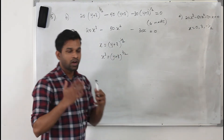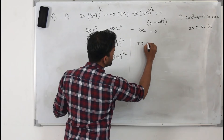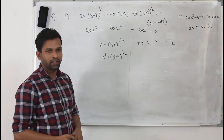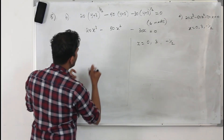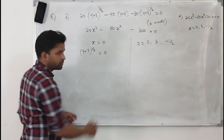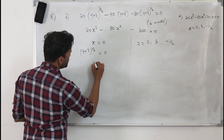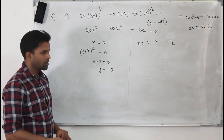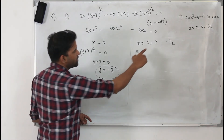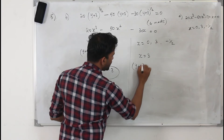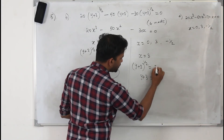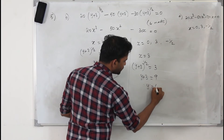We have already solved that equation and got three solutions. We are going to use those: x equals 0, x equals 3, and x equals minus one half, and substitute x back as (y plus 3) to the power of one half. For x equals 0: (y plus 3) to the power of one half equals 0, square both sides, y plus 3 equals 0, so y equals minus 3. For x equals 3: (y plus 3) to the power of one half equals 3, square both sides, y plus 3 equals 9, so y equals 6.